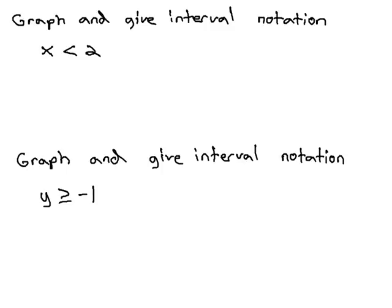When we graph inequalities, such as x is less than 2, we put them on a number line to represent all the possible values that are truly less than 2. Let's put an abbreviated number line that just goes up to 2.